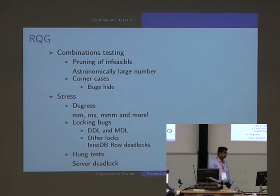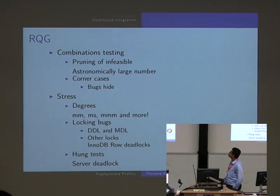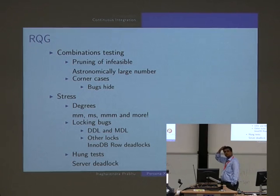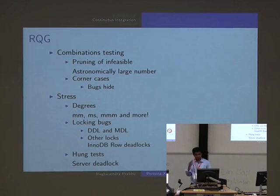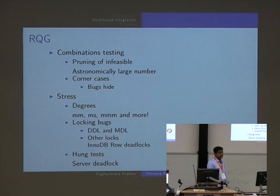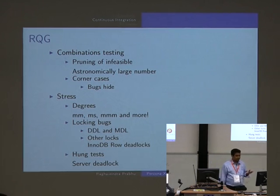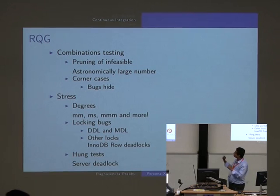Some manual tuning is required to reduce the number of combinations - specifically the combinations you know are not logically valid ones. The corner cases are where bugs usually tend to hide, and you'd like to test them as much as possible. The second part is stress testing - the Random Query Generator tests with all possible queries, generating queries a normal user or application may not even use.